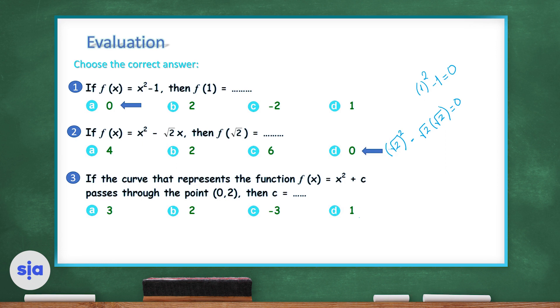Question 3: if the curve of f(x) = x² + c passes through the point (0, 2), we substitute x = 0 and f(x) = 2. So 2 = 0² + c, therefore c = 2. That finishes the evaluation section and brings us to the end of today's session. Thank you very much and good luck.